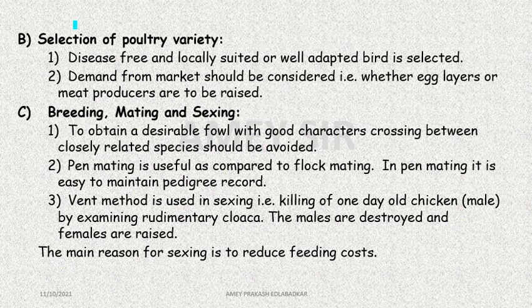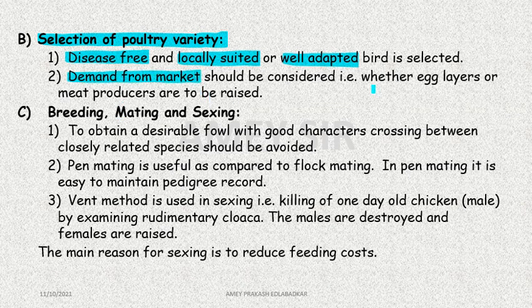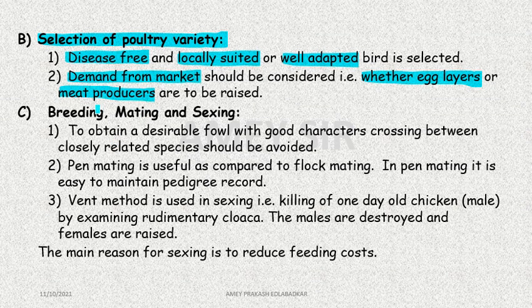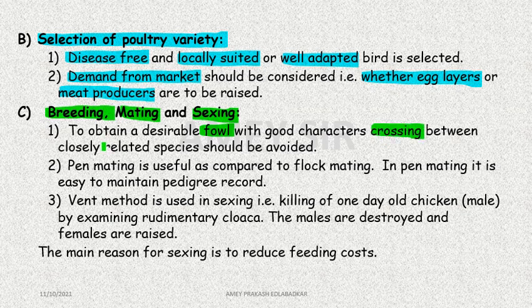Poultry variety selection is also an important aspect. The variety should be well suited and well adapted to local conditions. Market demand must also be understood - whether egg layers are needed, or meat producers/broilers. Accordingly, birds are selected. But the most important part is breeding - mating and sexing. These are three methods. To get a desirable breed of fowl, we need to focus on crossing while avoiding closely related species.